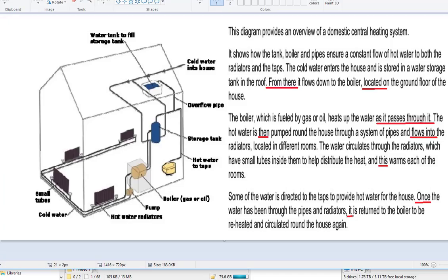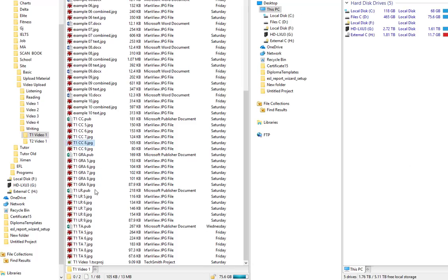If we go on to look at the vocabulary, we have this constant flow. Well, vocabulary is always difficult to get a really high score for. We have this located on, which I mentioned in cohesion also, but here it's used to describe where the boiler is, that's good. We have this system of pipes. Circulates, which the writer came up with by looking at the arrows in the diagram. Distribute the heat. So, for vocabulary, maybe 8 would be a little bit high.